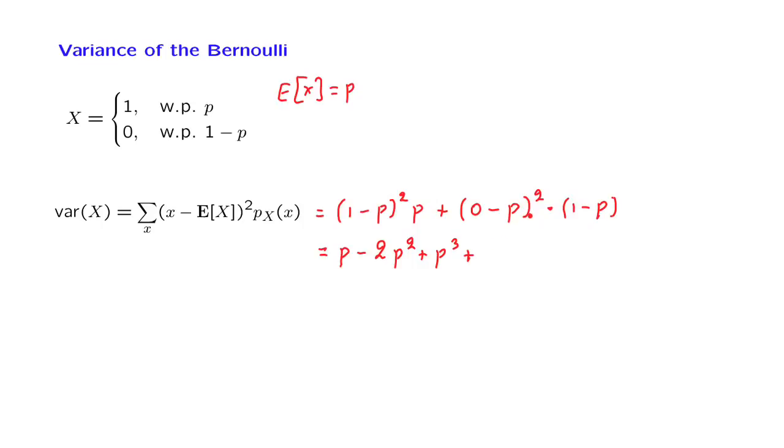And then from here, we have a factor of p squared times 1, p squared times minus p, that gives us a minus p cubed. Then we notice that this term cancels out with that term. p squared minus 2p squared leaves us with p minus p squared, and we factor this as p times (1 minus p).